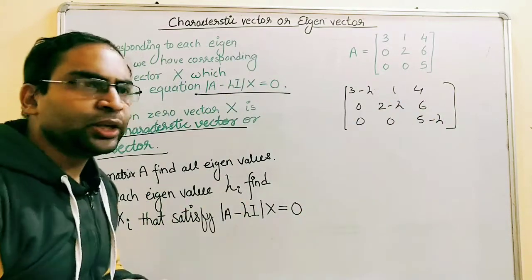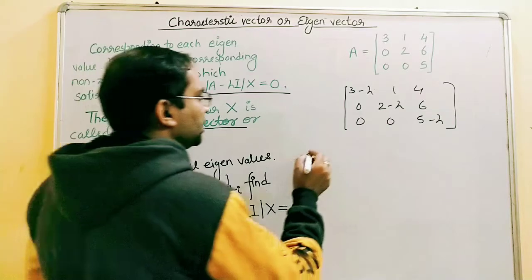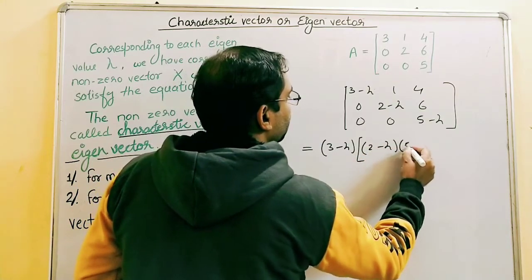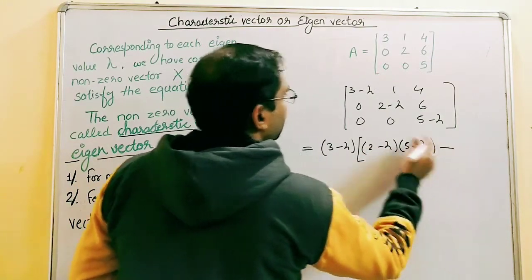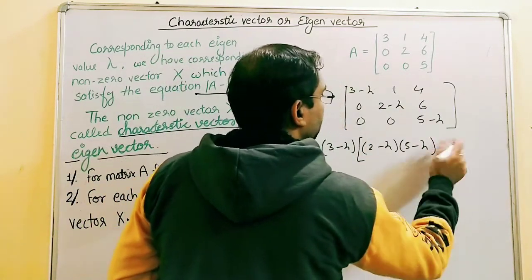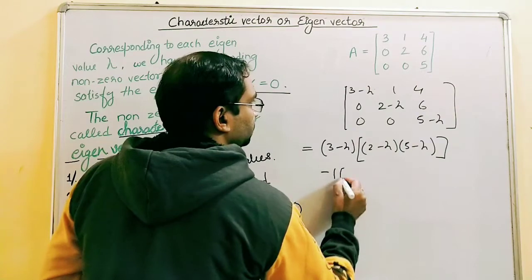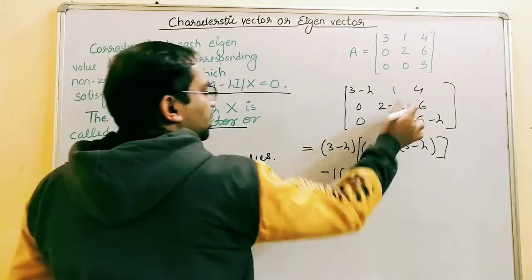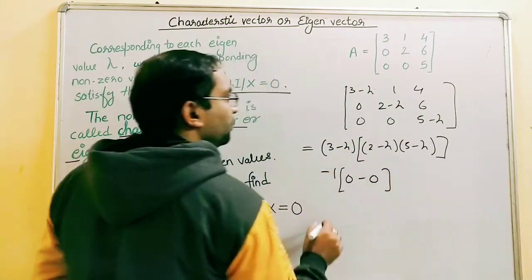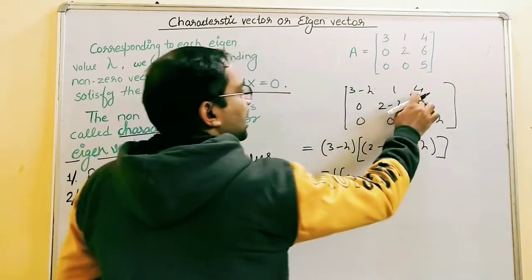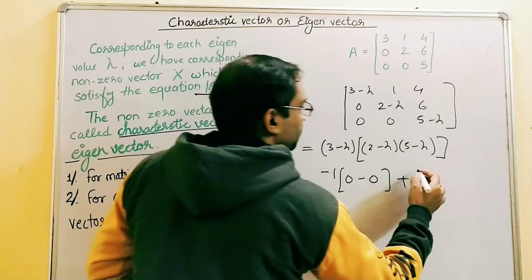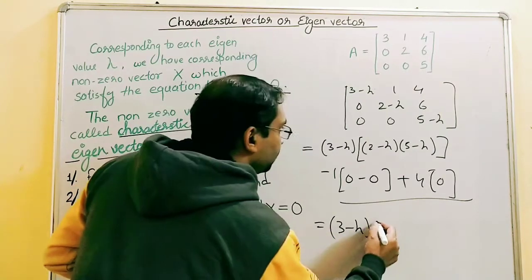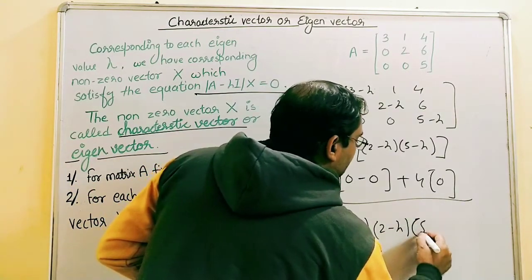Now let me expand this with respect to the first row. Expanding along row 1 gives (3-lambda) times [(2-lambda)(5-lambda) minus 0 times 6], minus 1 times [0 times (5-lambda) minus 0 times 6], plus 4 times [0 minus 0]. The second and third terms are all zero, so we are left with (3-lambda)(2-lambda)(5-lambda).